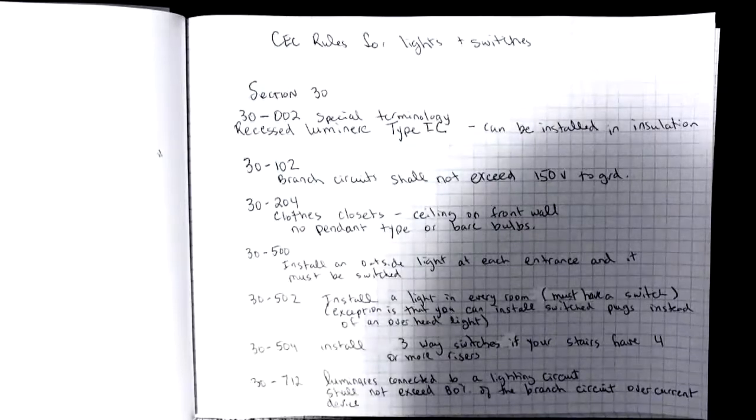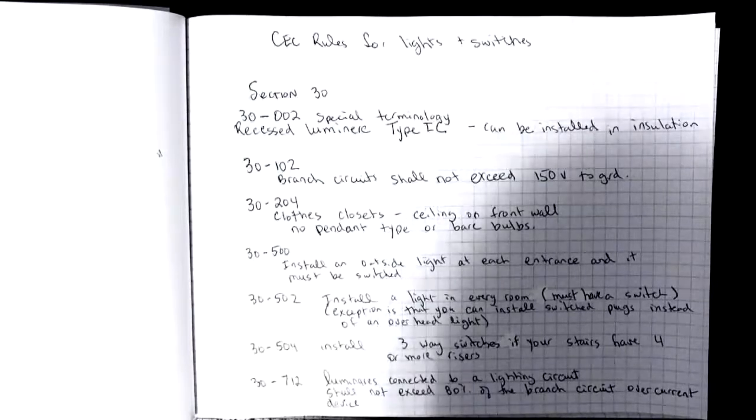30-712 talks about how many lights you can put on a lighting circuit. Often for dwelling units we just go with rule of 12. Nowadays with LEDs things are changing.